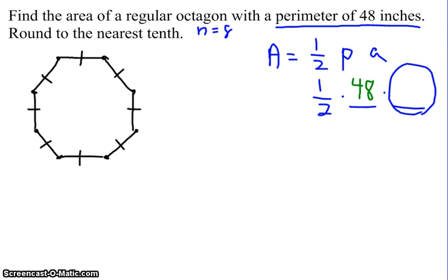All right, so like all of these problems to start, draw in that central point. And since an octagon has eight sides, we're going to draw eight radii. So we're going to create eight central angles. We're going to create eight triangles.